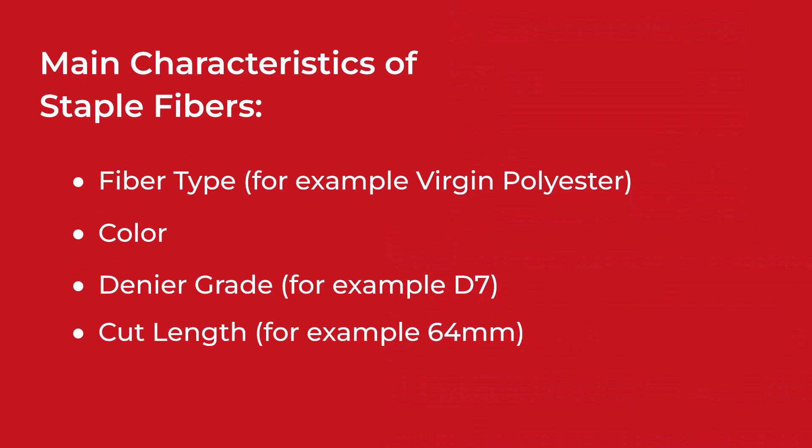Let's delve into the main characteristics of synthetic staple fibers. Fiber type or material is a key characteristic — fibers can be made from materials such as polyester, polypropylene, and several others. This factor also includes virgin, recycled, or hollow matters. Color: staple fibers can be produced in a variety of colors, however they are commonly defined in a colorless or neutral state. Denier grade: denier is a unit of measurement for the thickness of fibers, defining how thick each strand of fiber is.